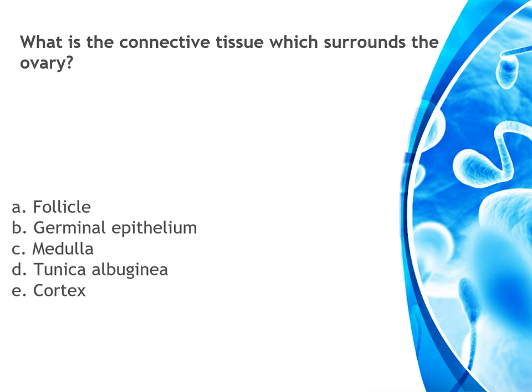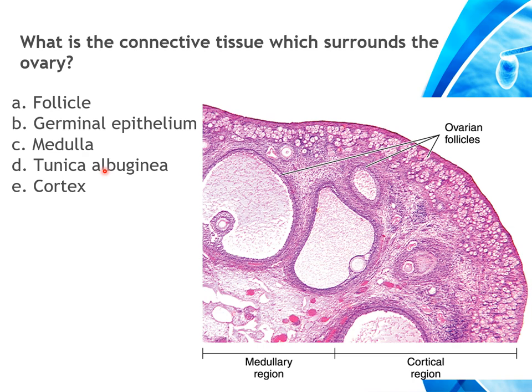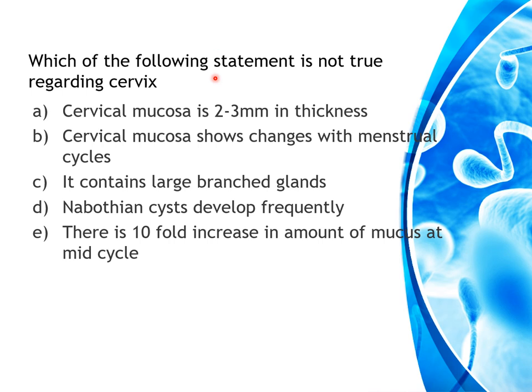What connective tissue surrounds the ovary? Options are follicle, germinal epithelium, medulla, tunica albuginea, or cortex. The diagram shows cuboidal lining epithelium, beneath which is the tunica albuginea; follicles in different stages form the cortex; and the center is the medulla. The answer is tunica albuginea.